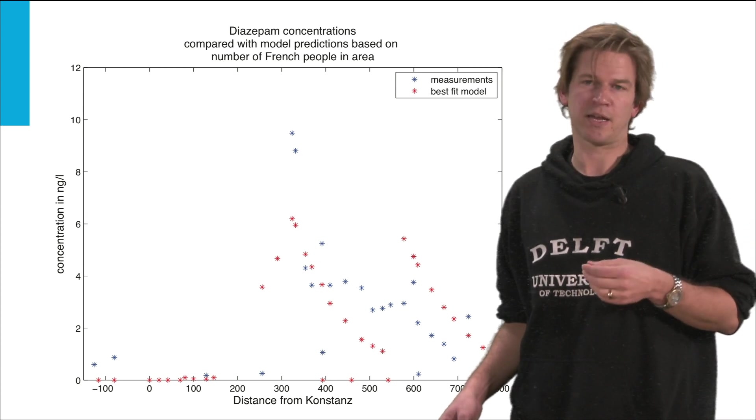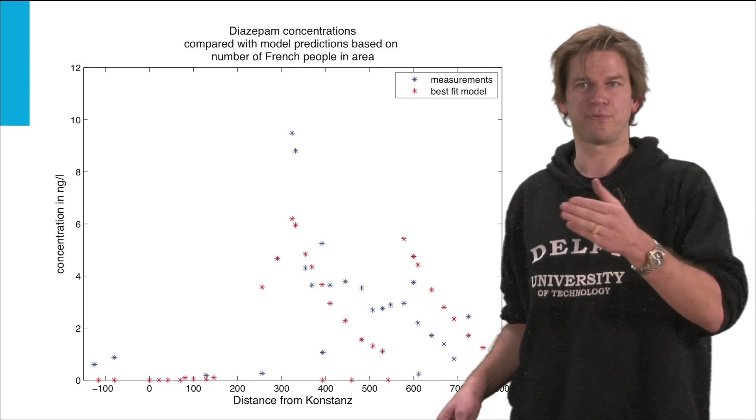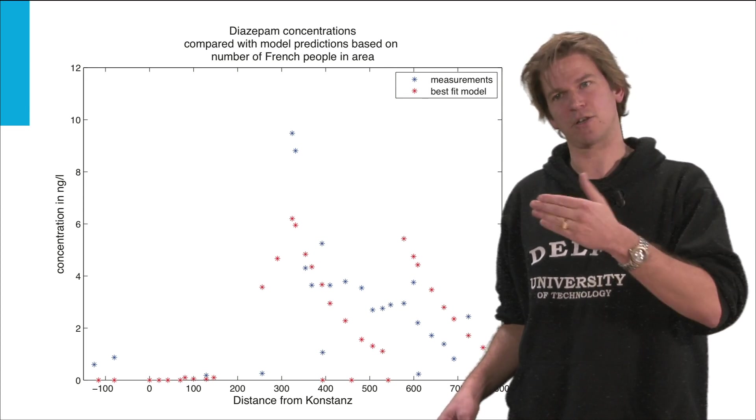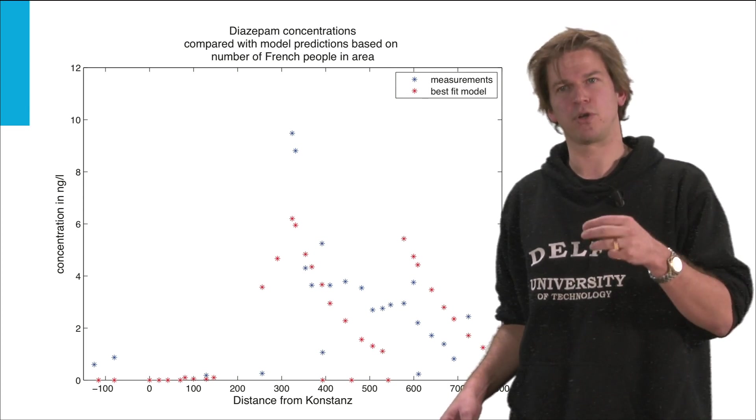For example, here we show Diazepam and somewhere after the city of Basel before the city of Strasbourg we see a spike in our measurements and then a slow decline, as if there was a point source pollution there.